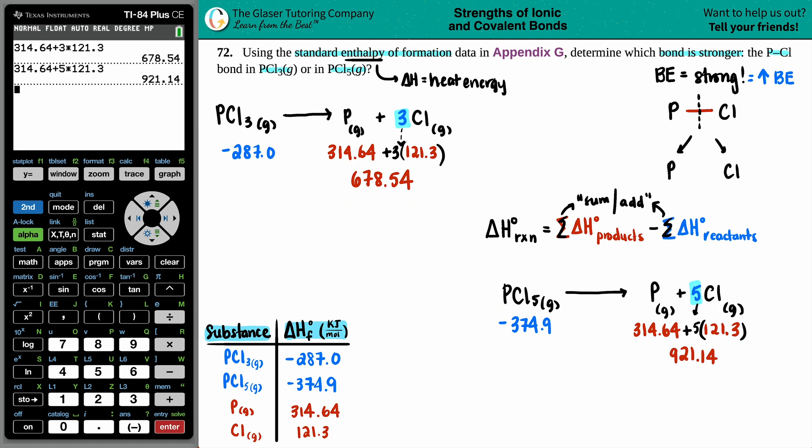We now have two numbers for both sides. So let's find out the delta H. We'll do the PCl3 one first. Delta H for the whole entire reaction is products minus reactants: 678.54 minus a negative 287.0. So we have 965.54 kilojoules per mole.